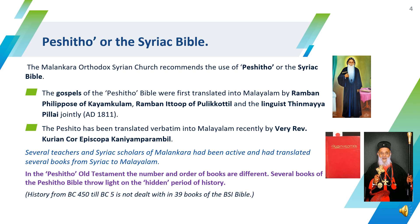The Malankara Orthodox Syrian Church recommends the use of the Peshitta, or the Syriac Bible. The Gospels of the Peshitta Bible were first translated into Malayalam by Ramban Philippos of Kayyamkulam, Ramban Ittu of Pulikotil, and the linguist Thinmaya Pillai jointly in AD 1811. The Peshitta has been translated verbatim into Malayalam recently by Very Reverend Kuriyanko Episcopa Kaniyampurambil. Few Syriac scholars of Malankara were also involved in the translation of several books from Syriac to Malayalam. The number and order of books are different in the Peshitta Old Testament, and it contains books covering the hidden period of history between BC 400 and BC 5, which is not available in the commonly used Bible.